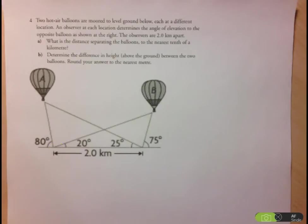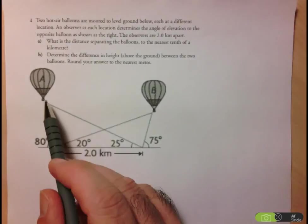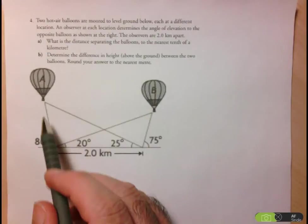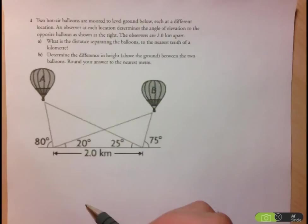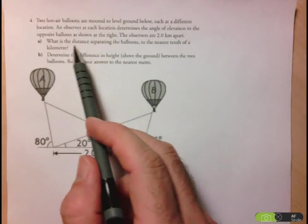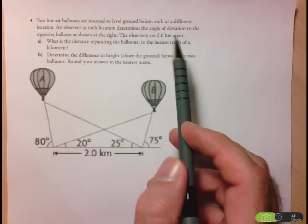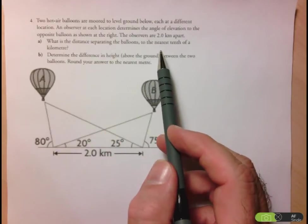Hi folks, we're going to take a look at this question which was on one of the worksheets. We have these two hot air balloons and a whole bunch of information about their positions. Let's take a look at what they're looking for. They want to know the distance separating the balloons to the nearest tenth of a kilometer.